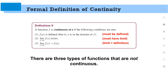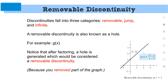Our first discontinuity is a removable discontinuity — also known as a hole. Let's talk about why this violates the formal definition of continuity. As soon as you violate any one of those three parts, you're done — it's discontinuous. A hole creates a problem because it is not defined at all values. Is there a limit at x = 1? Yes — it's two. But since we already violated step one, we're done.